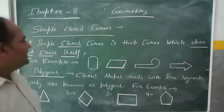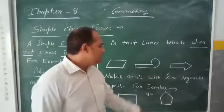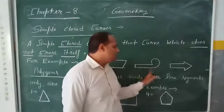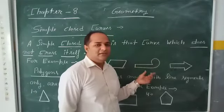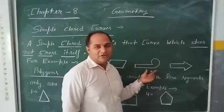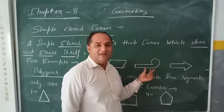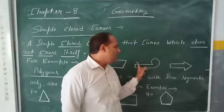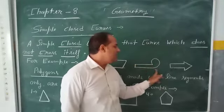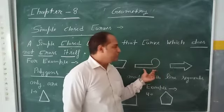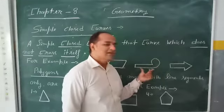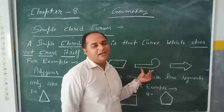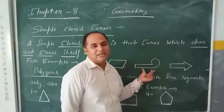Now, children, you can see this figure — this is a closed curve and does not cross anywhere. This figure does not cross itself anywhere, so this figure represents a simple closed curve.